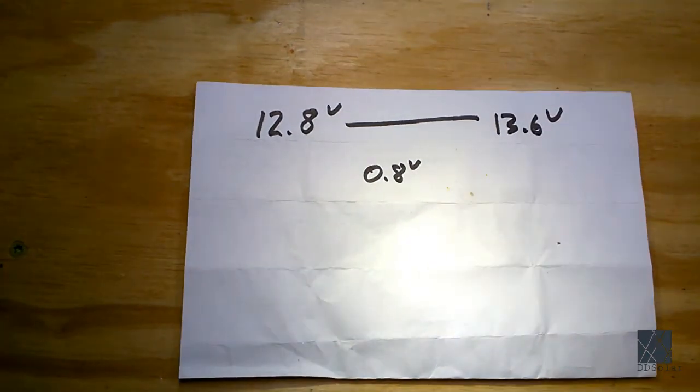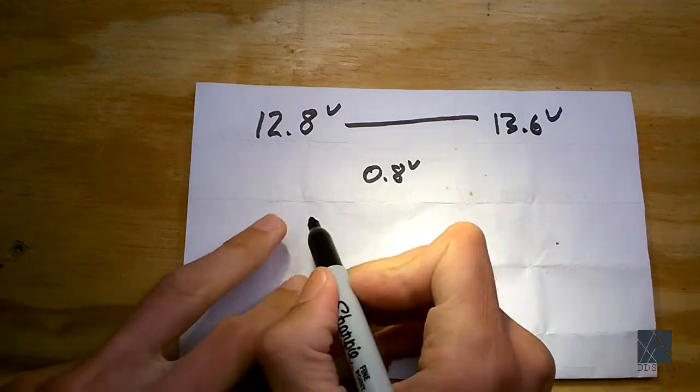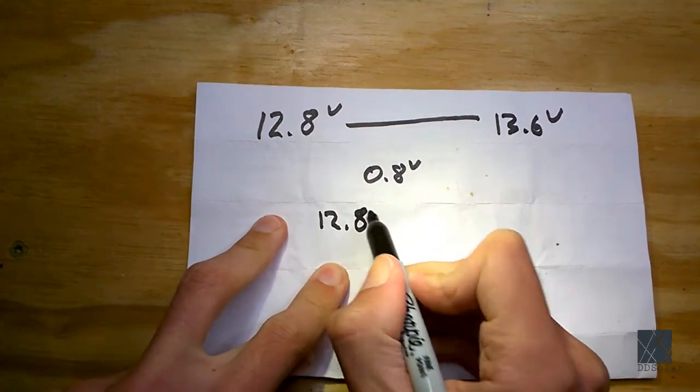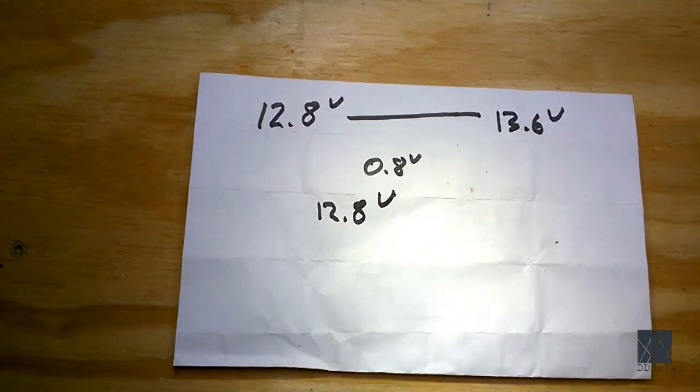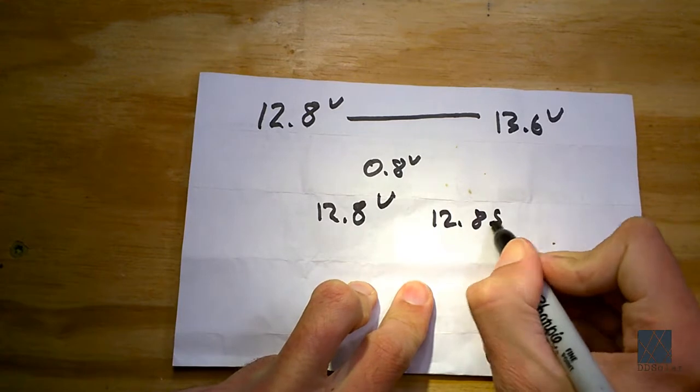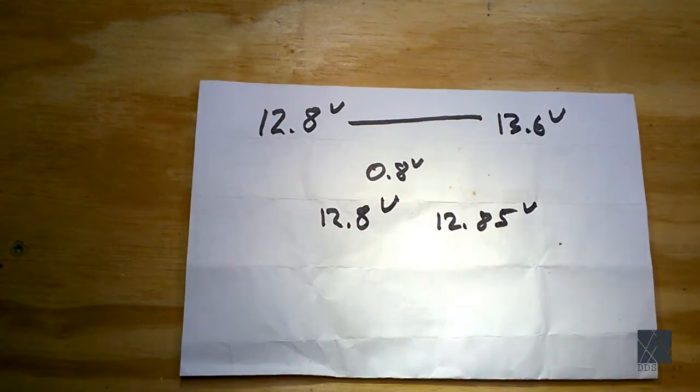A normal digital voltmeter, a cheap one, probably would display the voltage in three digits so it would probably say something like 12.8 volts and that would be three digits. A better digital voltmeter might say 12.85 volts because it has four digits to display the voltage with.